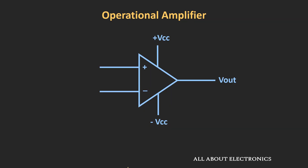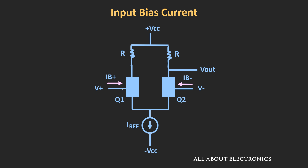So far in our discussion, we have assumed that the op-amp is an ideal op-amp — meaning no current is flowing into the op-amp terminals. But actually, whenever the biasing voltages are applied to the op-amp, a small amount of current flows through these input terminals. These currents are known as the input bias currents. The current flowing through the non-inverting terminal is IB+, and the current flowing through the inverting terminal is IB-. If you see the internal structure of this op-amp, these currents are basically the currents flowing through the transistors of the differential amplifier.